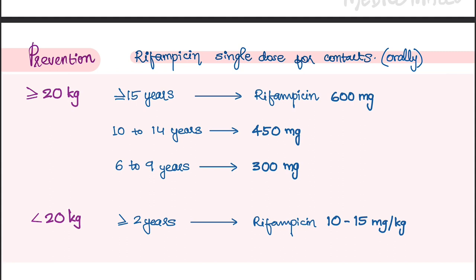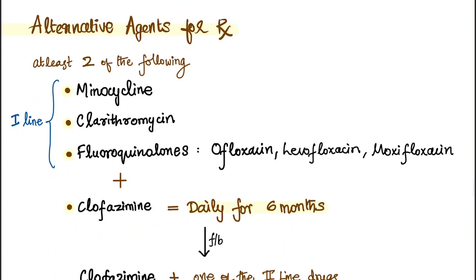For prevention of leprosy in close contacts, a single dose of rifampicin orally can be given. For contacts weighing 20 kg or more: age 15 years or above — rifampicin 600 mg; age 10 to 14 years — 450 mg; age 6 to 9 years — 300 mg. For contacts weighing less than 20 kg and aged two years or more, rifampicin 10 to 15 mg per kg single dose orally is given.